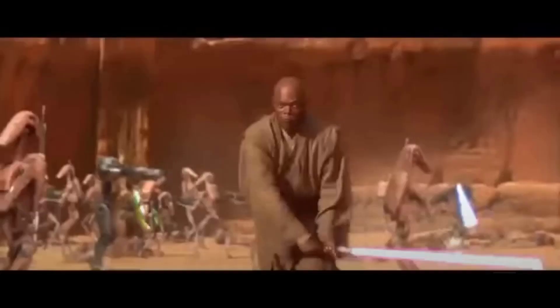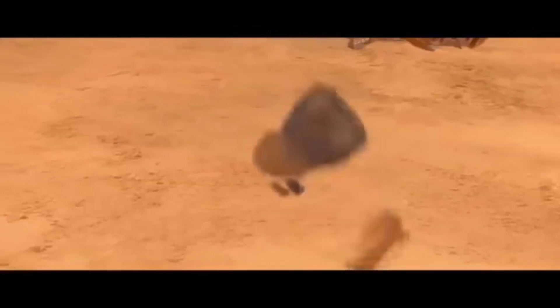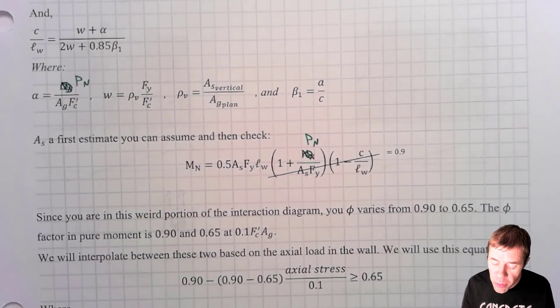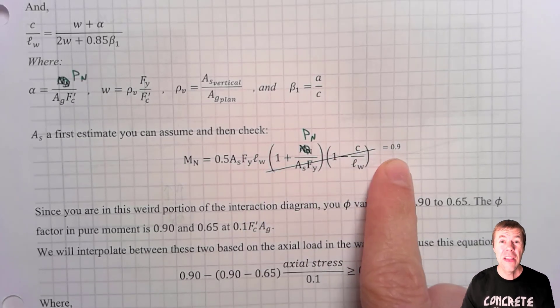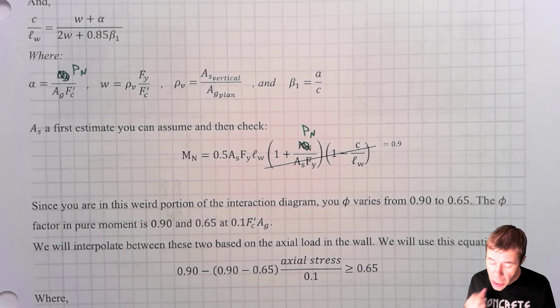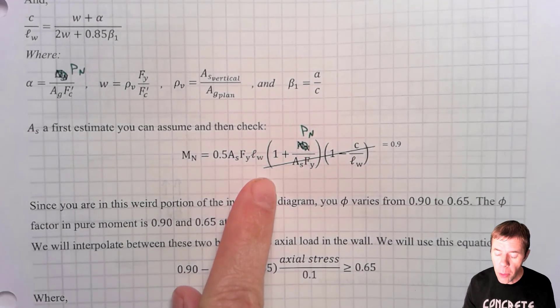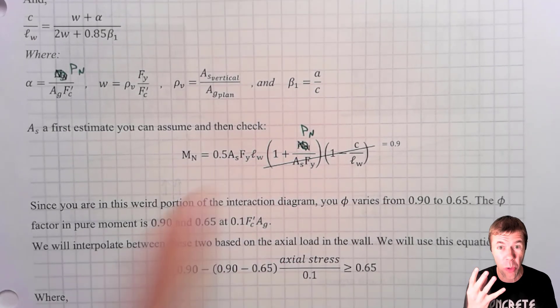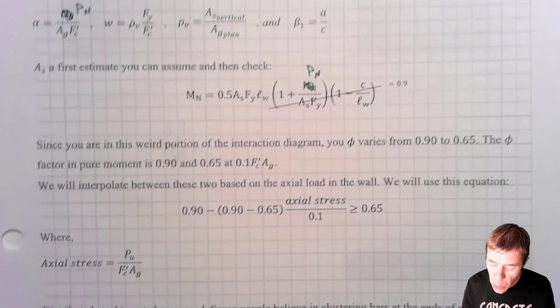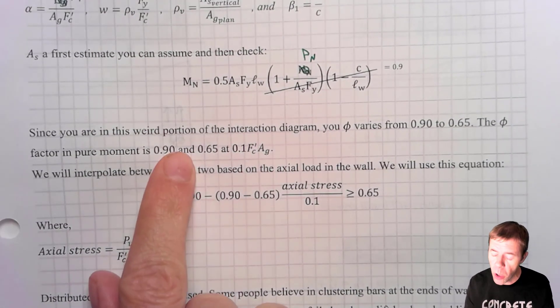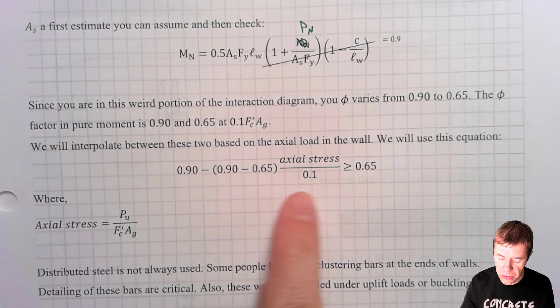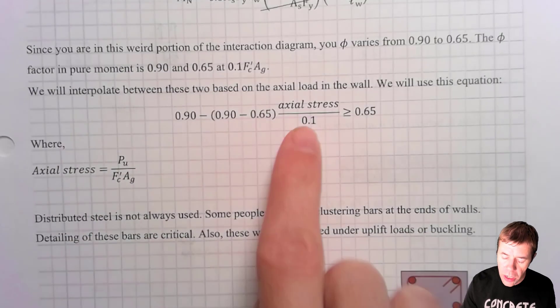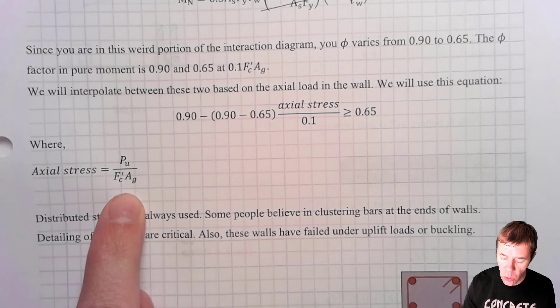But what we're going to do is first use a Jedi move, or a ninja move, and we're going to simplify this. We're going to take this big, long equation and we're going to assume all of this goes to 0.9. This is very similar to a trick that I use to design beams. But it is a key first step. And it can very quickly help you figure out how much area of steel that you need. And of course, you have to go back and check this assumption. So since we're in that weird portion of the interaction diagram, that's the part where the phi is going to vary from 0.9 to 0.65. We're going to use this linear interpolation to figure out where that actually is, where the axial stress is P U over F prime C area gross.